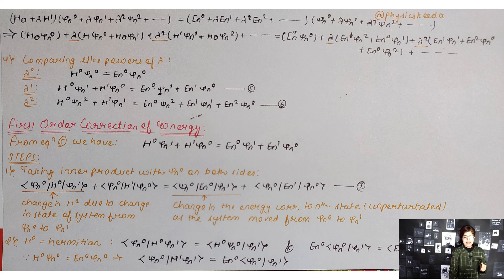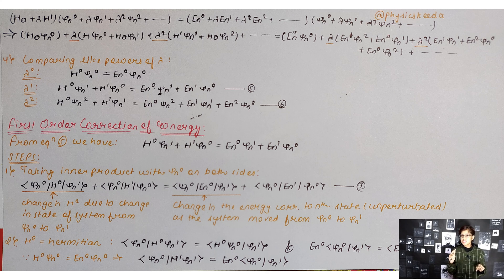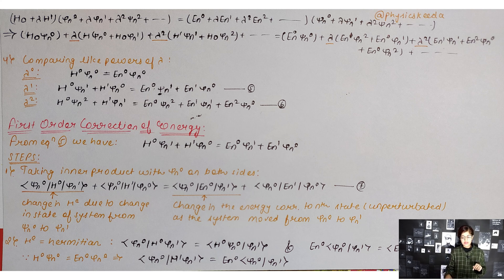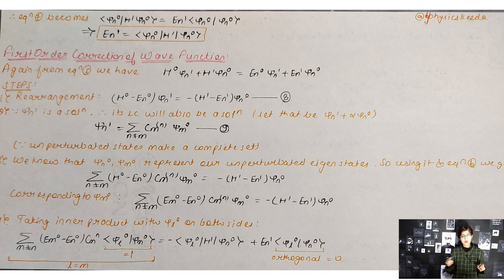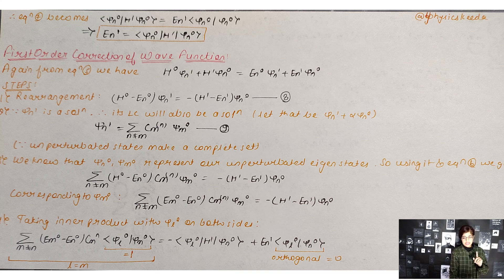Since H₀ is Hermitian, we know by property that ⟨ψ_m0|H₀ψ_m1⟩ = E_n0 ⟨ψ_m0|ψ_m1⟩. Using this, and exploiting the Hermitian condition, we get that ⟨ψ_m0|H'|ψ_m0⟩ = E_n1 × ⟨ψ_m0|ψ_m0⟩. Since that inner product equals 1, we can clearly write E_n1 = ⟨ψ_m0|H'|ψ_m0⟩.